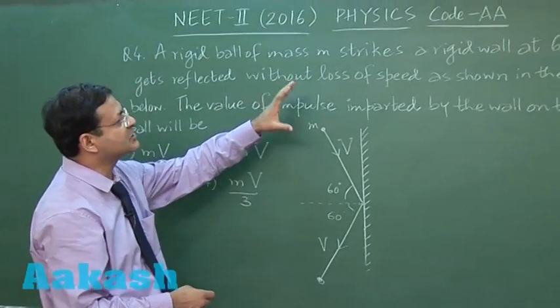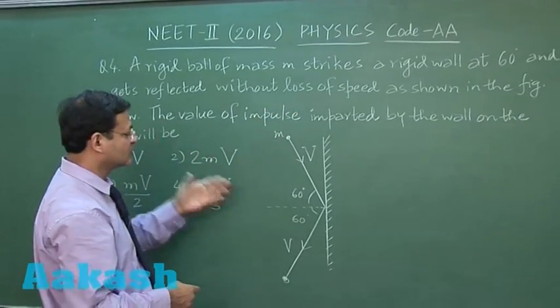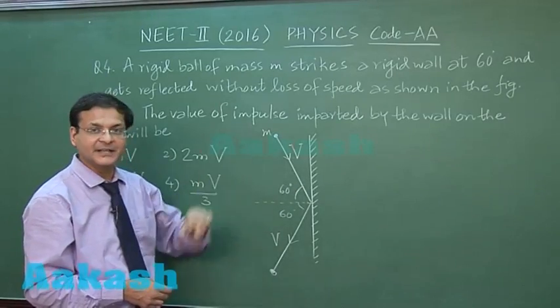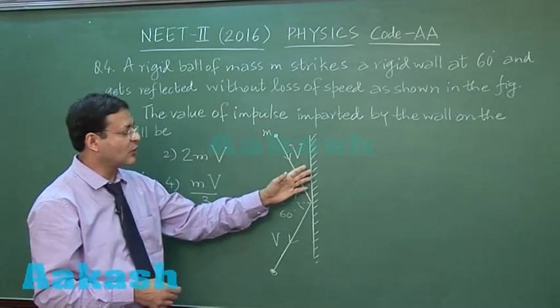It says that a rigid ball of mass M strikes a rigid wall at 60 degrees. So this 60 degrees is with the normal to the wall, not with the wall. The angle with the wall is 30 degrees.